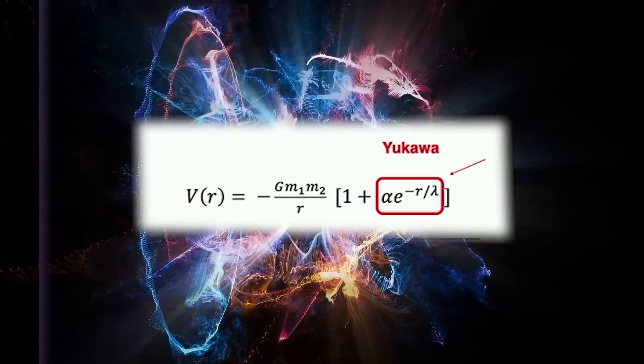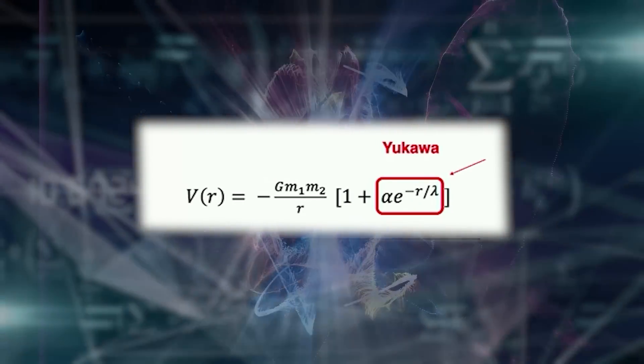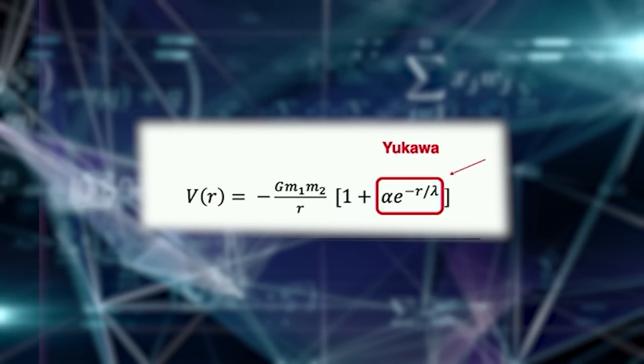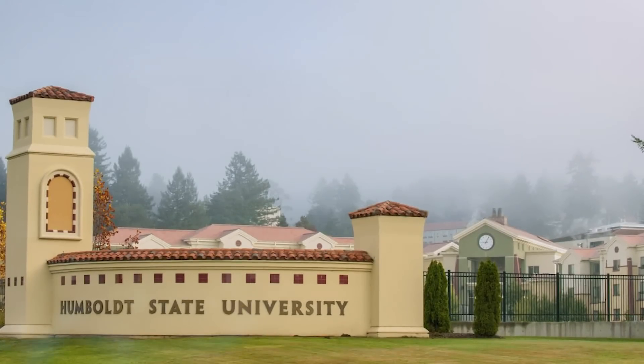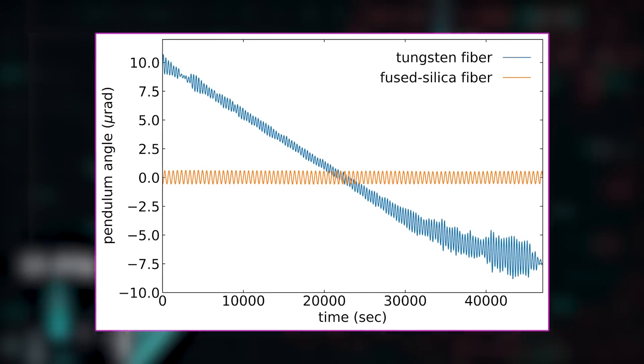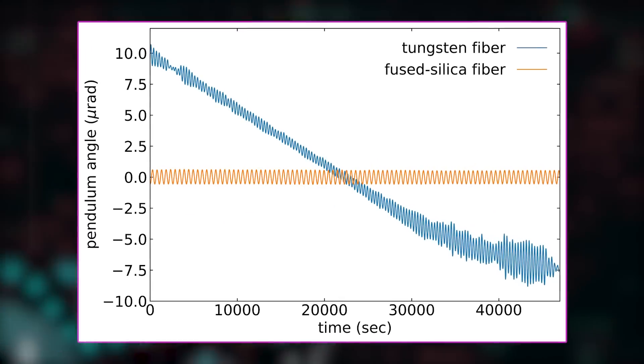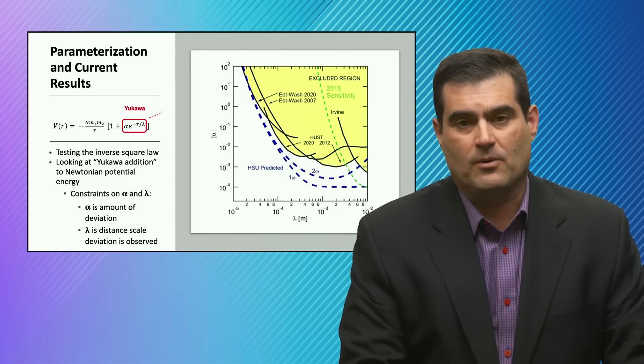So the amount of the deviation in potential alpha is plotted here on the right as a function of the inverse of the length scale over which the deviation from inverse square law takes place. In the Humboldt State University experiment, HSU, they predict they could get down to even lower values than these world-beating experiments at University of Washington. They're working with the same team members, as you'll see if you read the paper. Those authors are collaborators at the University of Washington.